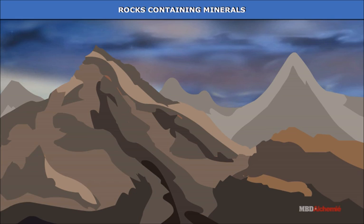Over 3,000 minerals have been identified so far, but only a few are abundantly found in the earth's crust. Rocks are aggregates of minerals, and geologists use these properties to classify minerals in rocks.